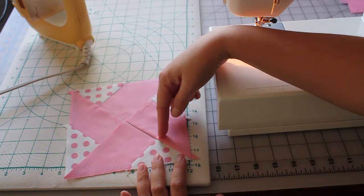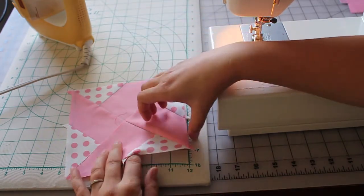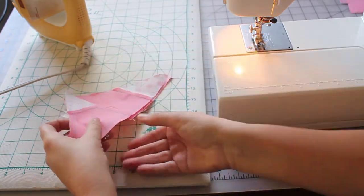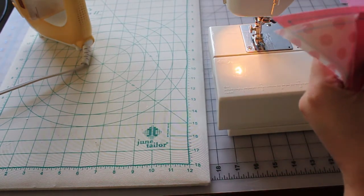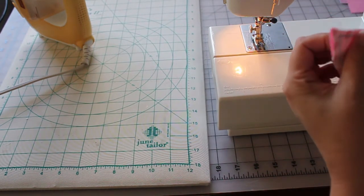Now I have these two pieces that just need to get stitched together and my block's all done. When I put these pieces together, I want to make sure that I nest those seams and feel for them. Make sure that they're all lined up.